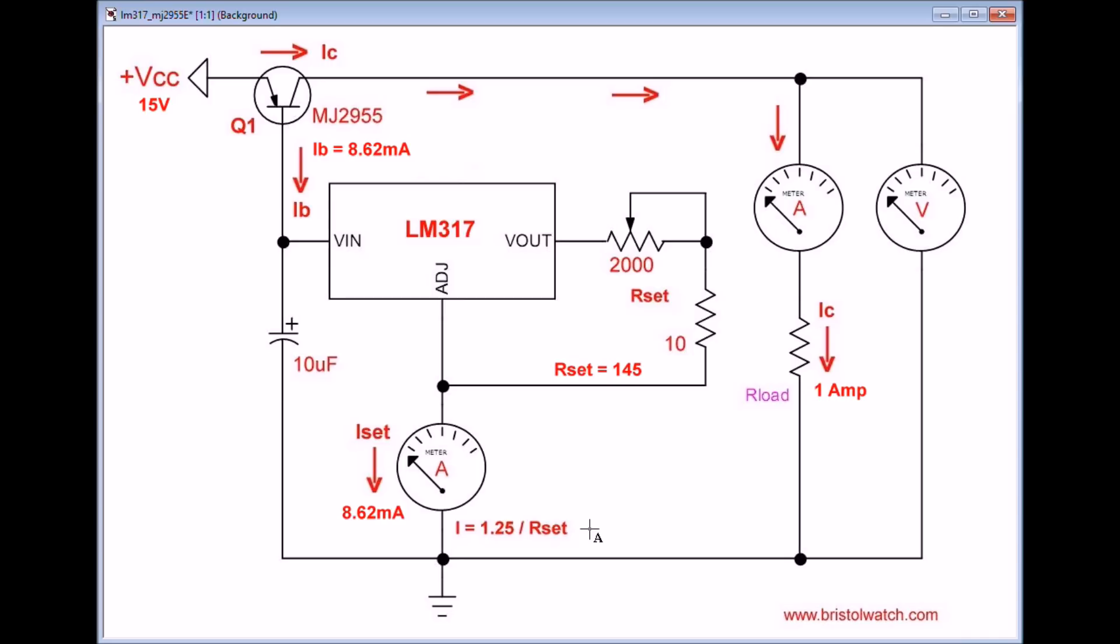These were actual measured voltages. RSET was adjusted to 145 ohms. This gave me an ISET measured through this meter of 8.62 milliamps. But ISET is the same thing as IB, which is also 8.62 milliamps. The spec sheet for the MJ2955 says it has a gain between 5 and 70. That's your HFE or DC gain.